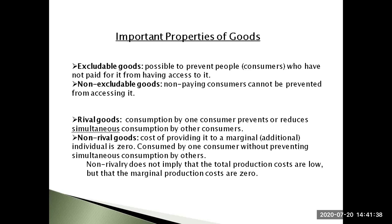On the other hand, a good is considered non-rivalrous or non-rival if for any level of production the cost of providing it to a marginal or additional individual is zero. Non-rival goods may be consumed by one consumer without preventing simultaneous consumption by others. Most examples of non-rival goods are intangible — most intellectual property is non-rival. In fact, certain types of intellectual property become more valuable as more people consume them; these are called anti-rival goods.